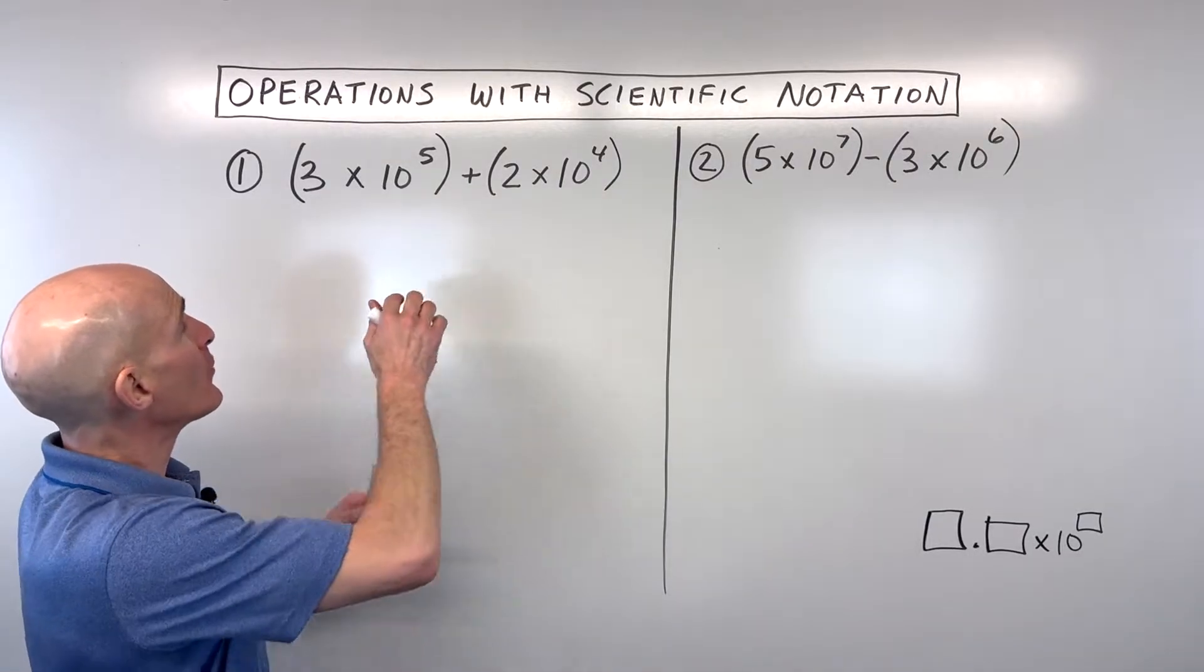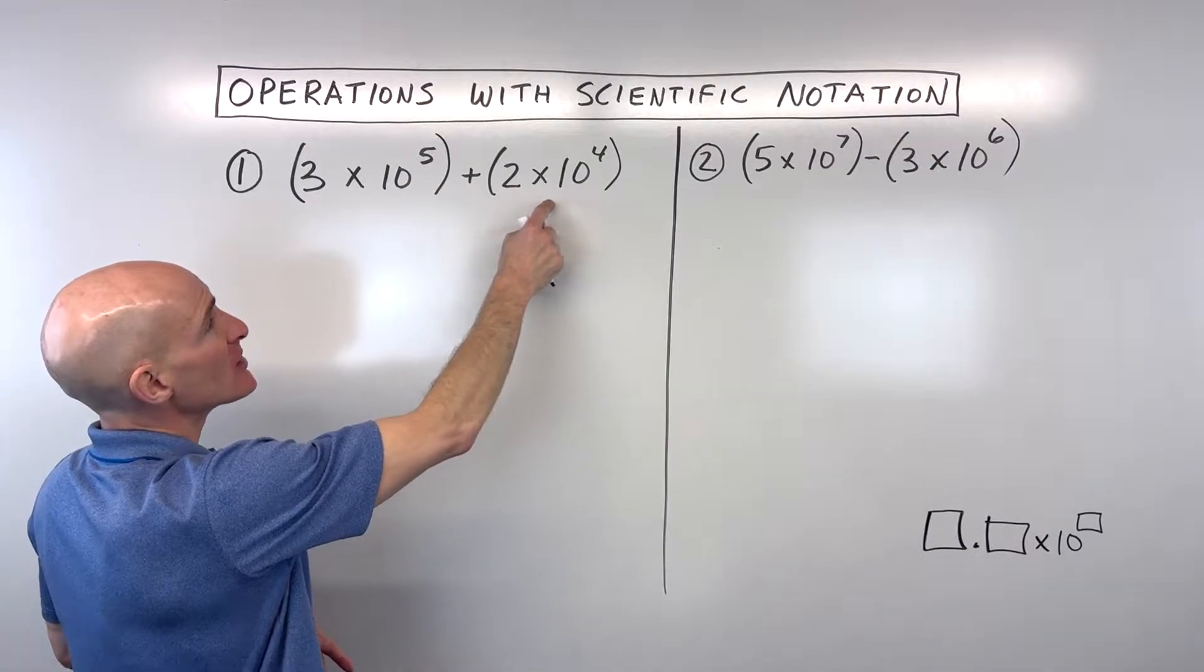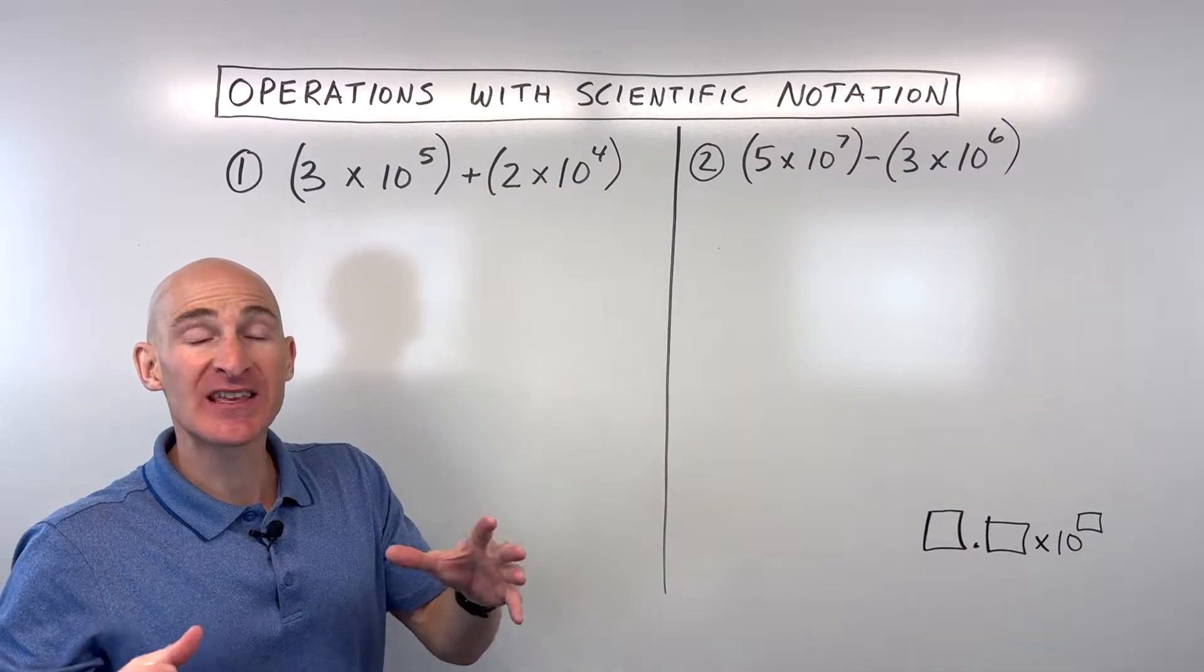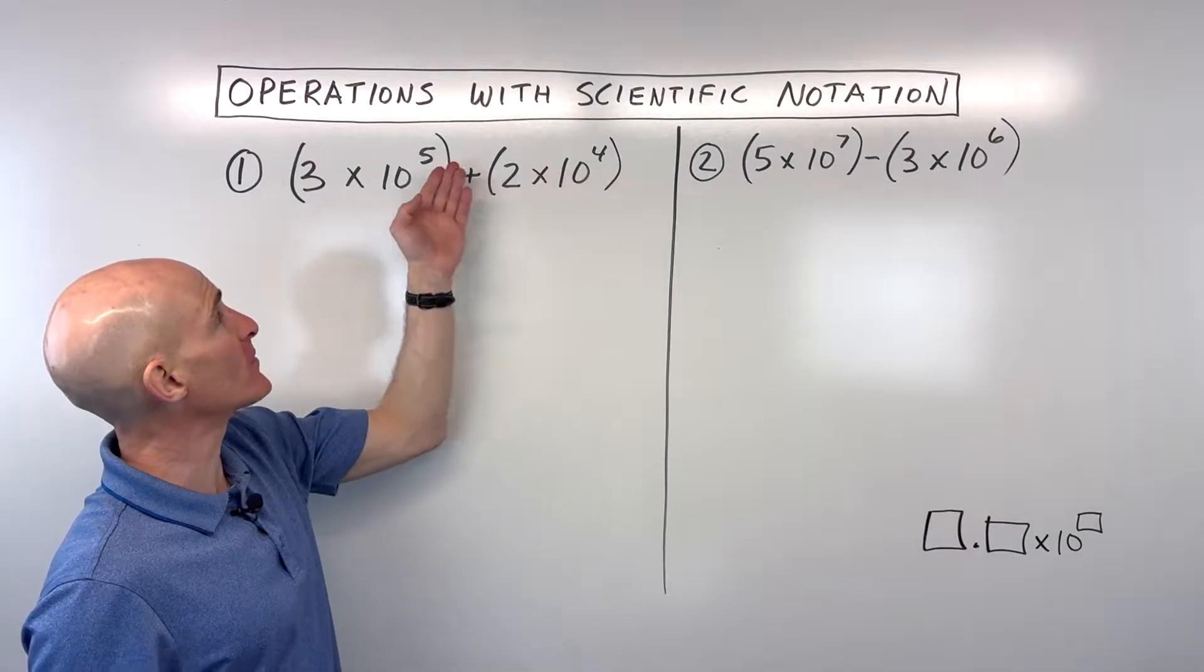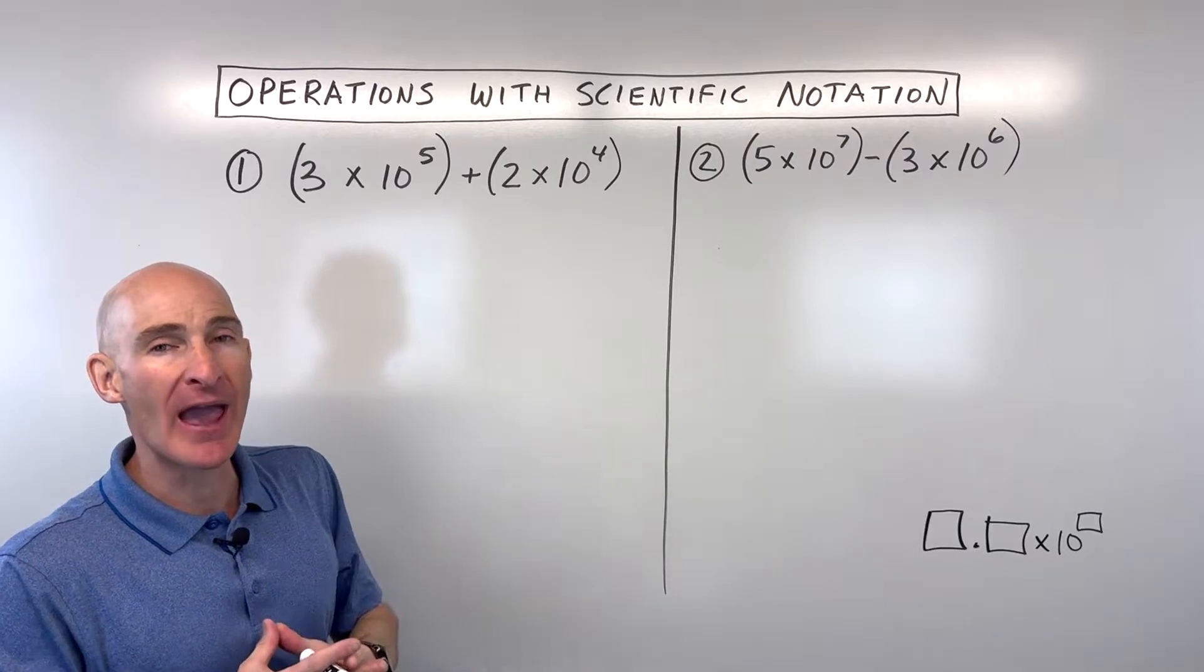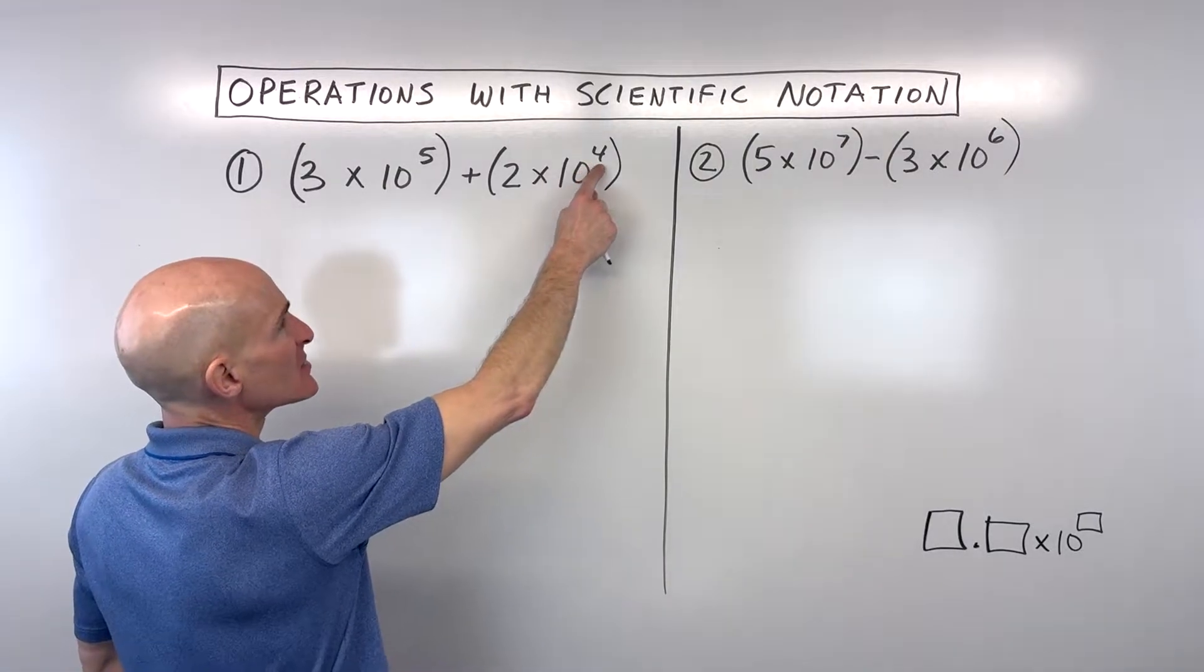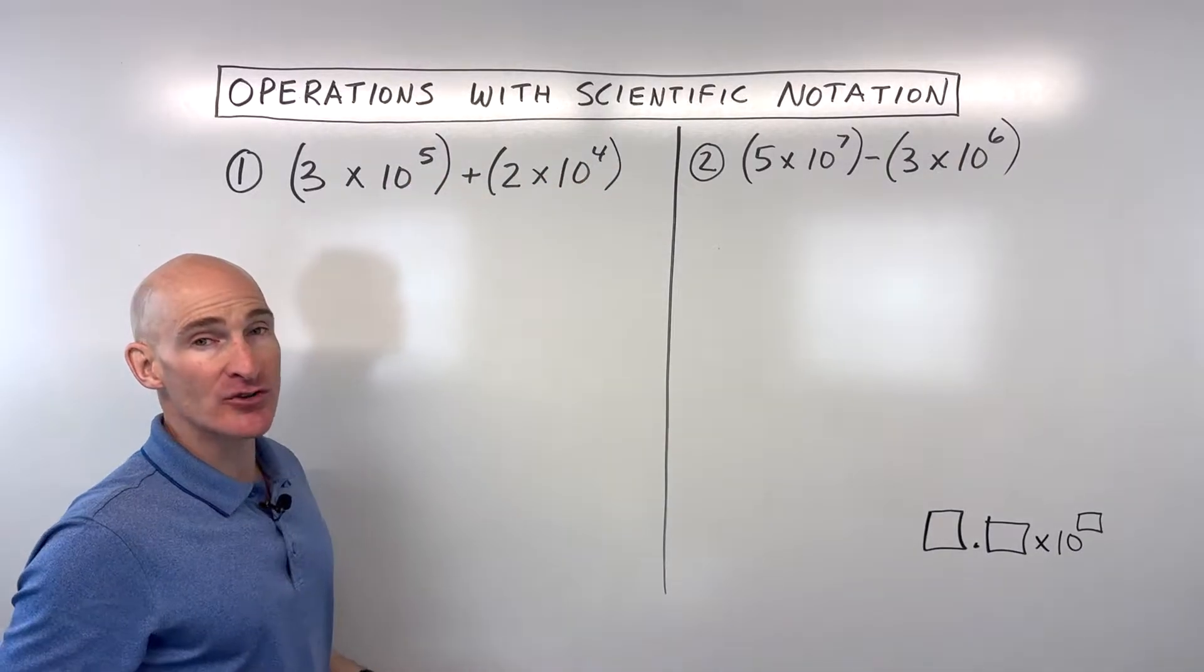The first example, we've got 3 times 10 to the 5th power plus 2 times 10 to the 4th power. Now, the problem with these two numbers is they're not the same orders of magnitude. This is 10 to the 4th, this is 10 to the 5th. This is clearly a larger number. So how do we add them together? What I like to do is take the number that's a smaller order of magnitude and get it to match the one that's the larger order of magnitude.